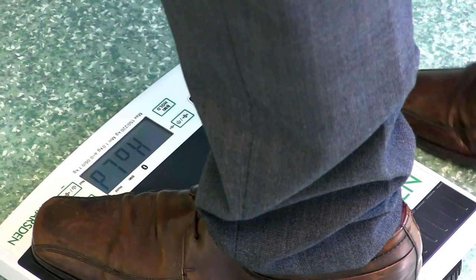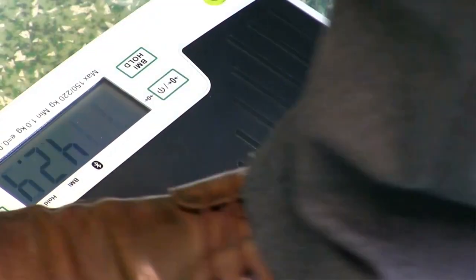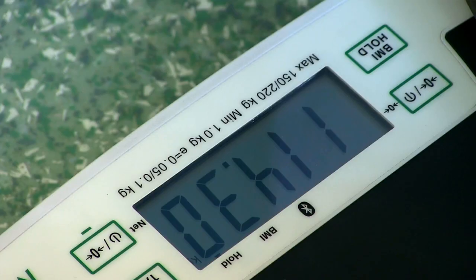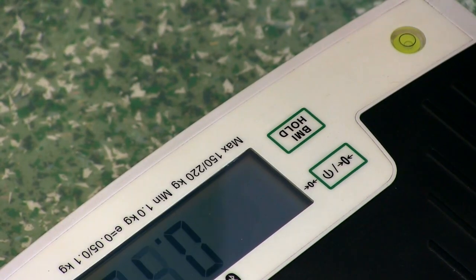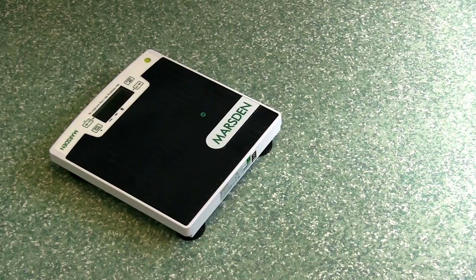Press the BMI hold button once. Have your patient stand on the scale. The patient can then stand off the scale once they've heard the beep. Once they've stood off the scale, the LCD display will alternate between showing the patient's weight and the patient's BMI. To disable this function again, just press the hold/BMI button once and it goes back to its standard weighing mode.